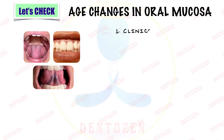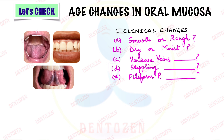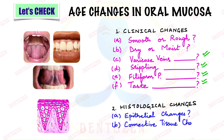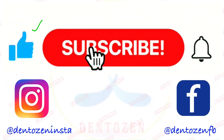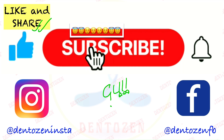Now let's check what you've learned. Consider: does the mucosa become smooth or rough? Dry or moist? What are the varicose veins on the ventral surface of the tongue called? What happens to stippling and filiform papillae? What happens to taste perception? And what are the epithelial and connective tissue histological changes? That's all for this video — tap the like button, share with your friends, keep watching, keep learning, keep smiling, and good luck for your exams. See you in the next video!